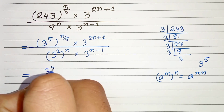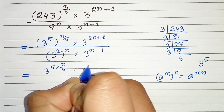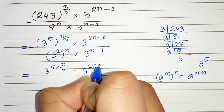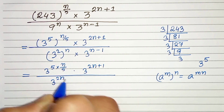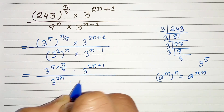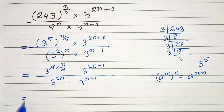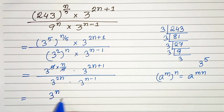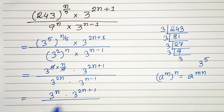So we get 3 to the power 5 times n by 5, times 3 raised to the power 2n plus 1, divided by 3 to the power 2n times 3 to the power n minus 1. Now, 5 gets cancelled and we are left with 3 to the power n times 3 to the power 2n plus 1, divided by 3 to the power 2n times 3 to the power n minus 1.